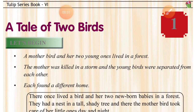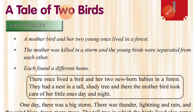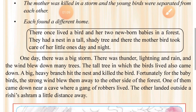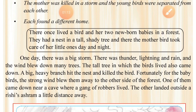A mother bird and her two young ones lived in a forest. The mother was killed in a storm and the young birds were separated from each other. They had a nest in a tall shady tree — tall and shady are adjectives, words which qualify the noun 'tree.' The mother bird took care of her little ones day and night.